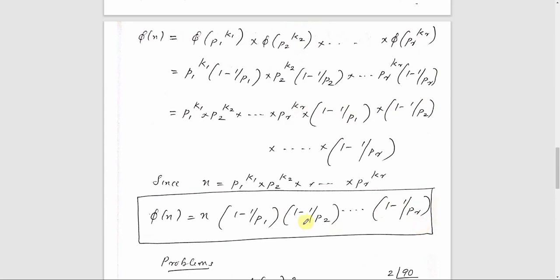This is the third and final equation. The general formula is: phi of n equals n into (1 minus 1 by p1) into (1 minus 1 by p2) into ... into (1 minus 1 by pr), where p1, p2, ..., pr are all the distinct prime factors of n.